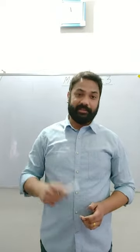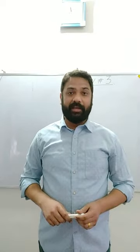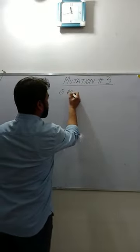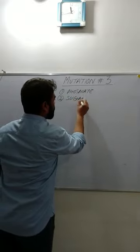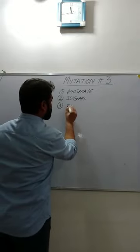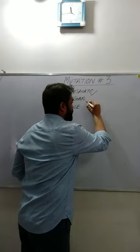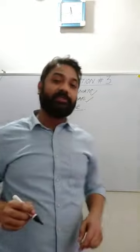Hello everyone, welcome to the third lecture on mutation. In the last lecture, the second lecture on mutation, we saw the structure of nucleotides and discussed the components: phosphate, sugar, and base. We discussed the structure of phosphate, then the pentose sugar and the differences in DNA and RNA. Today we will discuss the base, or nitrogenous bases — what a base is and what different types of bases we have in DNA and RNA.